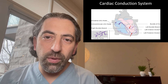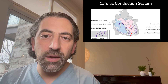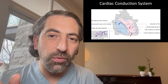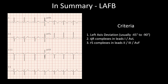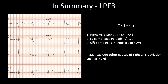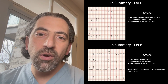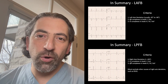In summary: both left anterior fascicular block and left posterior fascicular block cause slight increased QRS duration but less than 120 milliseconds or 3 small squares. In left anterior fascicular block, there is extreme left axis deviation, a small Q and large R complex in leads 1 and AVL, and a small R and large S complex in leads 2, 3, and AVF. In left posterior fascicular block, there is right axis deviation, a small R and large S complex in leads 1 and AVL, and a small Q and large R complex in leads 2, 3, and AVF. Remember that right bundle branch block can coexist with either fascicular block. Thank you very much and I hope that was useful.